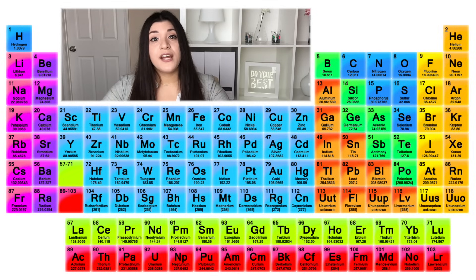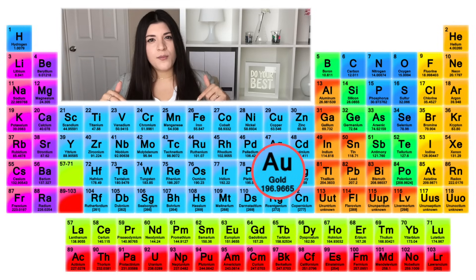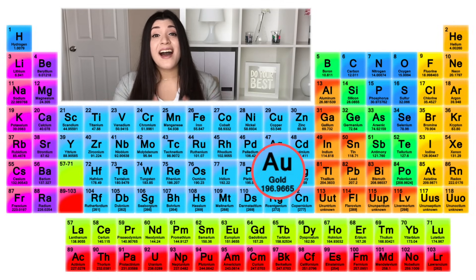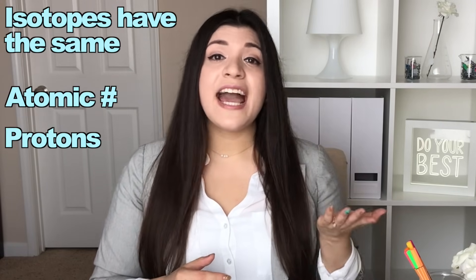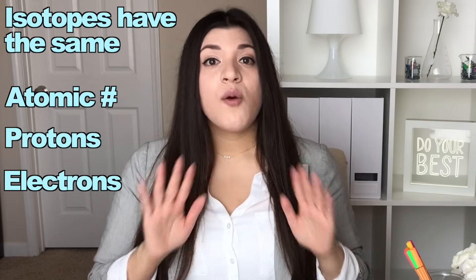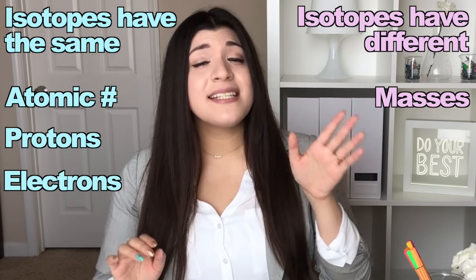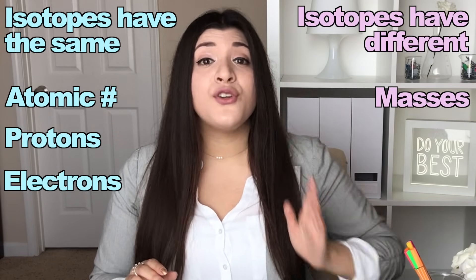If we were to look at the periodic table and look for where AU or gold is, we'd see it has a bottom number — that atomic mass. That atomic mass is actually the average of all the different types of isotopes of that element. Isotopes have the same atomic number, the same protons and electrons. However, they do not have the same masses — they have different masses and a different number of neutrons.